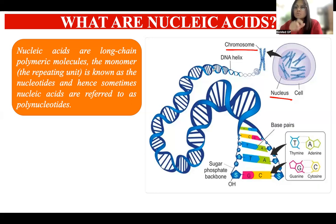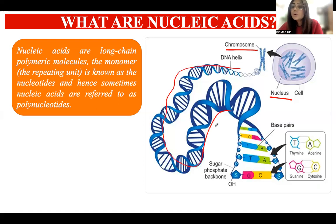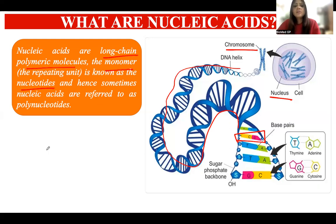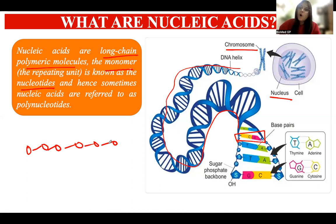If you unwrap this chromosome, you'll find the thread-like structure of DNA, which is a helical double-stranded structure. Looking deeper into what DNA is made of, you'll see it is made up of certain nucleotides, or base pairs. Nucleic acids are long-chain polymeric molecules whose monomeric unit is the nucleotide. Different nucleotides join together to form long chains, also called polynucleotides.